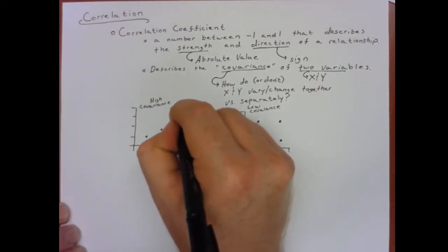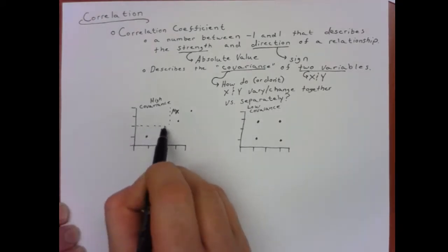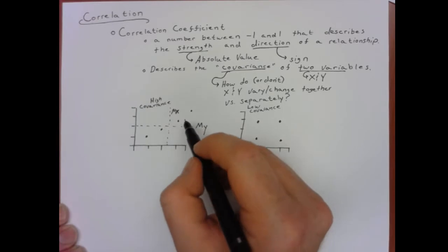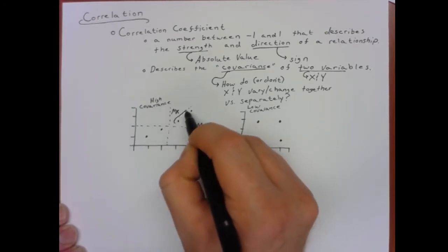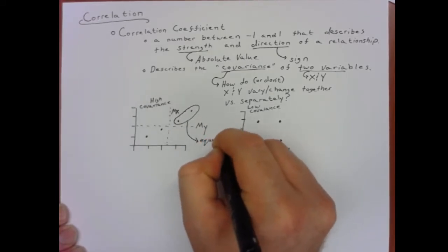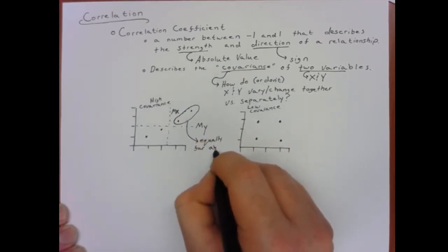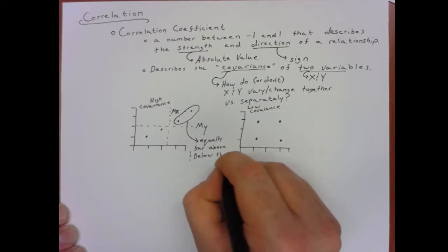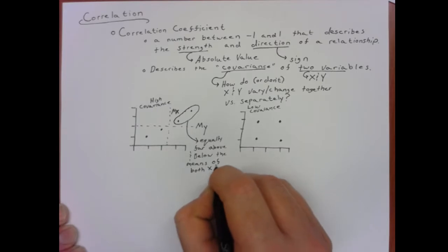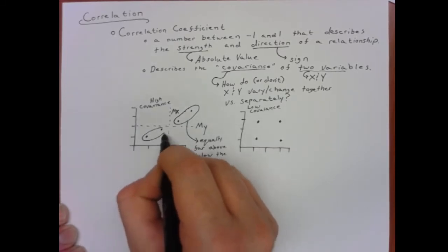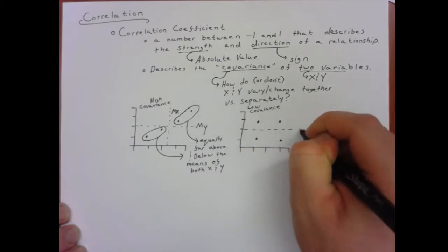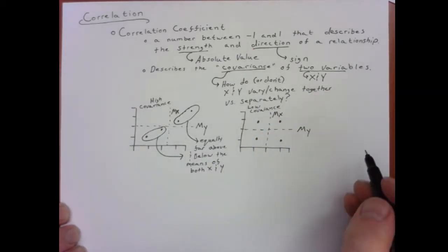To think about this, let's sketch in a dotted line where the mean of x would be and where the mean of y would be for these two variables. If we look at these top two points, you can see they're both above the mean of x and both above the mean of y. The point that's really far above the mean of x is really far above the mean of y. If we look at the two lower points as well, we see this same pattern, only now we're talking really far or not very far above and below the mean of x and y.